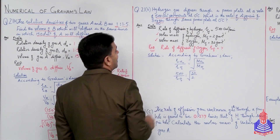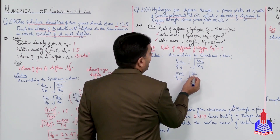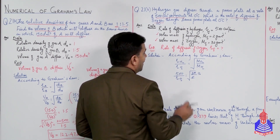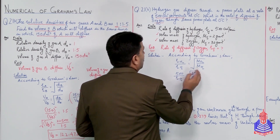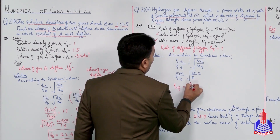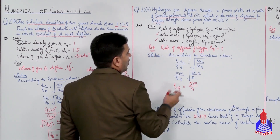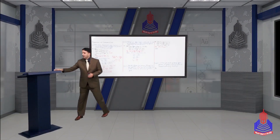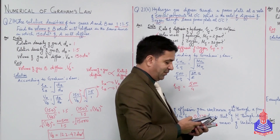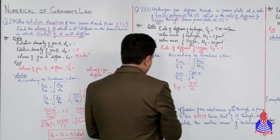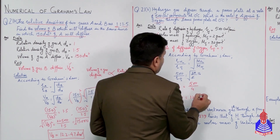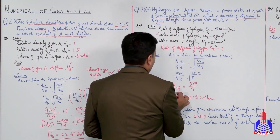Molecular mass of oxygen is 32 divided by 2, which gives 16 under the square root. The square root of 16 is 4. So 500 over rate of oxygen equals 4. Therefore, the rate of diffusion of oxygen is 125 cm³ per minute. Very simple approach.